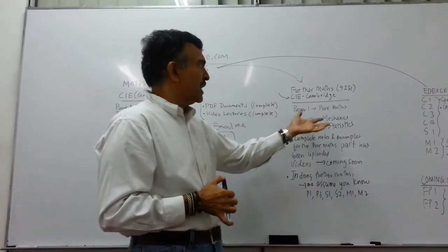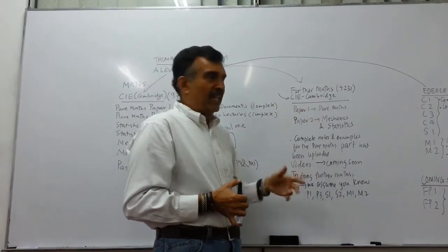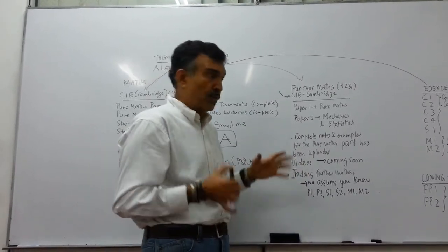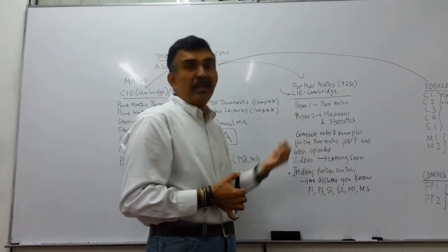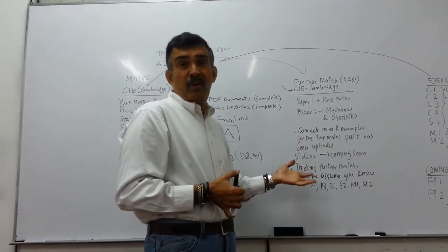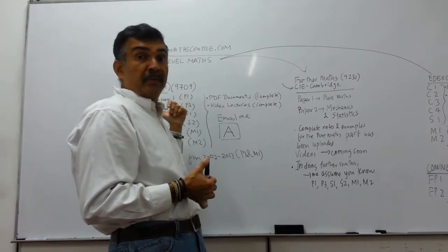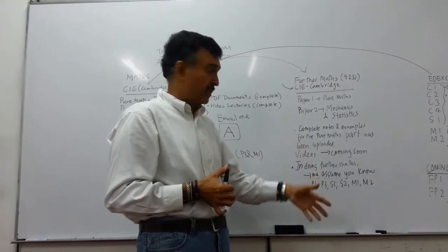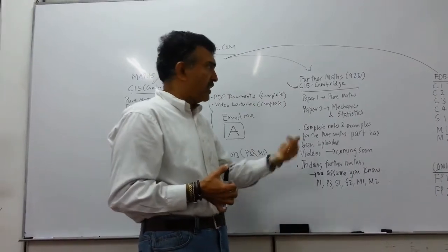Now, before saying anything here, this pure maths, mechanics and statistics that you'll find in further maths, there's an assumption that you know quite a bit of the stuff in your maths courses like P1, P3, M1 and M2, S1 and S2. So when you deal with further maths, there's an assumption, like your syllabus clearly says to you, that they're going to assume that you know your maths courses, going to be like P1, P3, S1, S2, M1 and M2. So if you are doing further maths and you're running into trouble, go back to the maths 9709 website and get help from there. That'll be the best way to get around this.